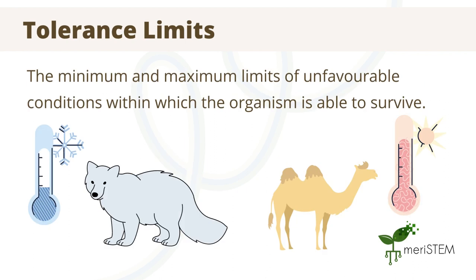This process is only able to be conducted when they are within the organism's tolerance limits — the minimum and maximum limit of unfavourable conditions within which the organism can survive. This varies for all species, and to an even smaller extent from organism to organism. For example, an arctic fox will have a much lower maximum temperature for its tolerance limit than a camel, who is usually found in warmer desert conditions.